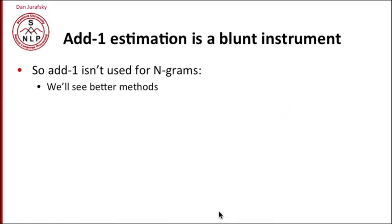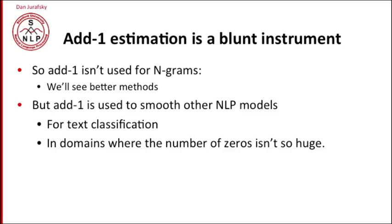In other words, add-one estimation is a very blunt instrument. It makes very big changes in the counts in order to get this probability mass to assign to this massive number of zeros. And so in practice, we don't actually use add-one smoothing for n-grams. We'll have better methods. We do use add-one smoothing for other kinds of natural language processing models. So add-one smoothing, for example, is used in text classification or in similar kinds of other domains where the number of zeros isn't so enormous.